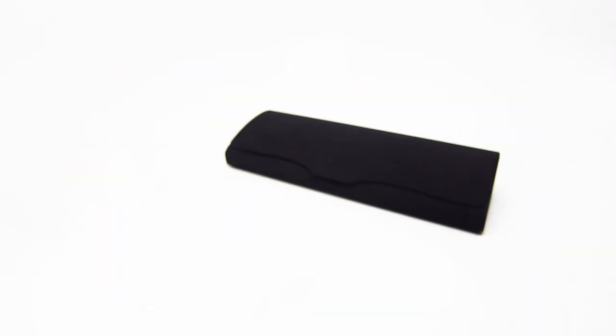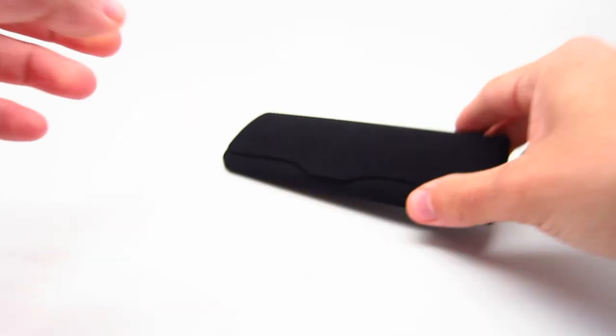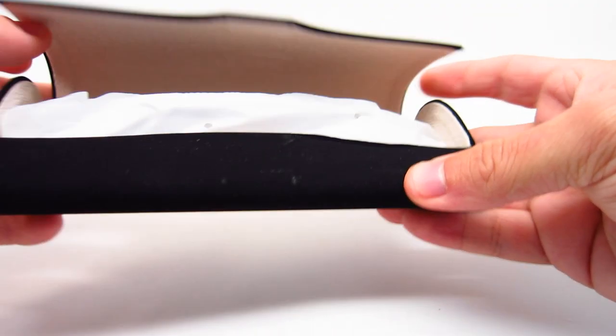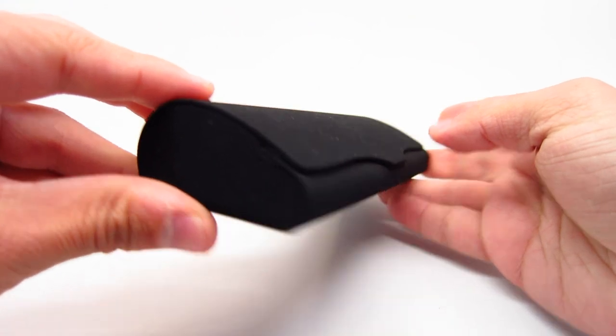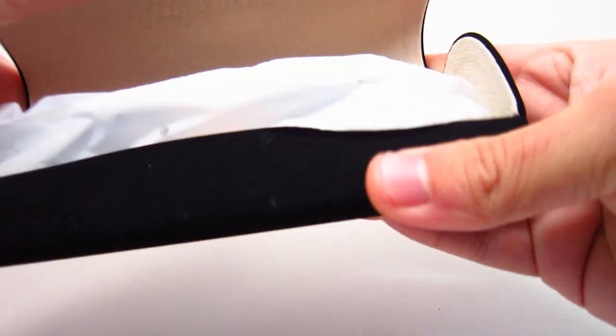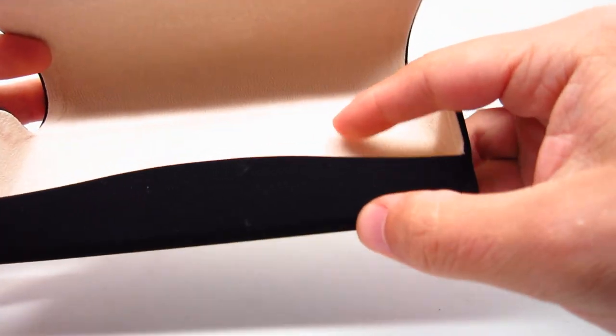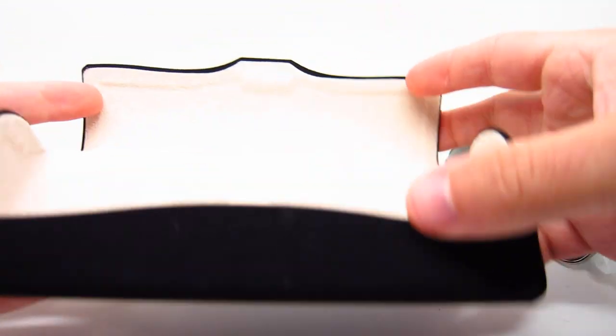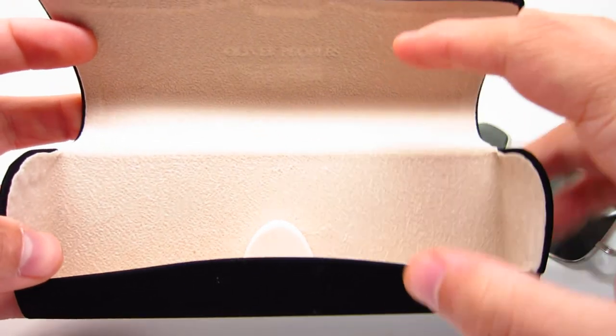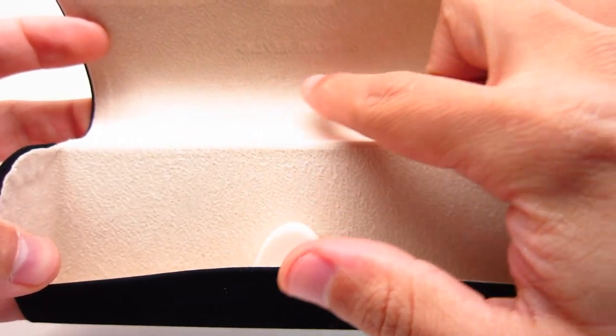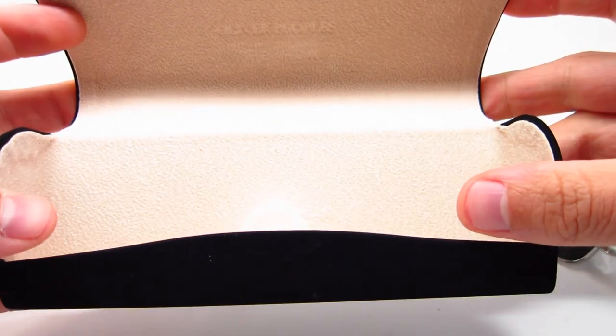So let's take a look at the frames. So it is a nice thin case. So inside we have the glasses. Inside the case, it's like a beige color. And there is an imprint that says Oliver Peoples the roll on here.